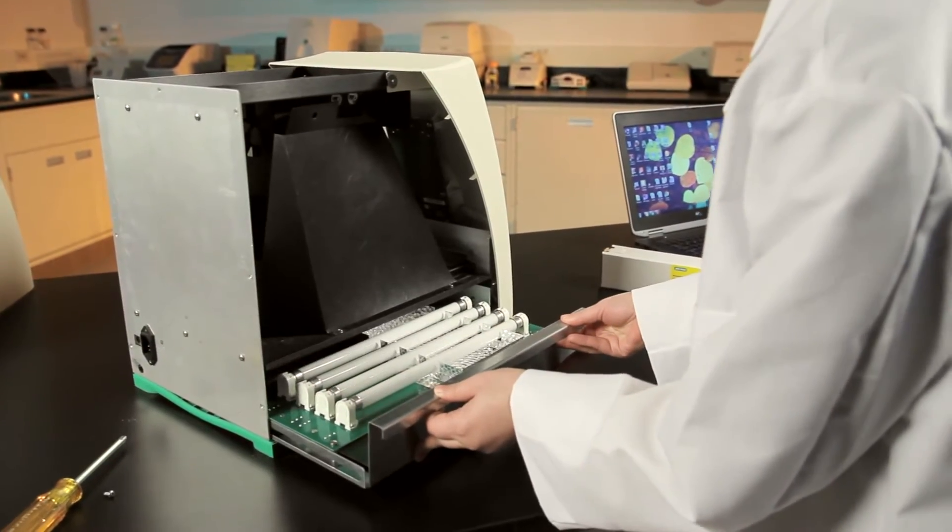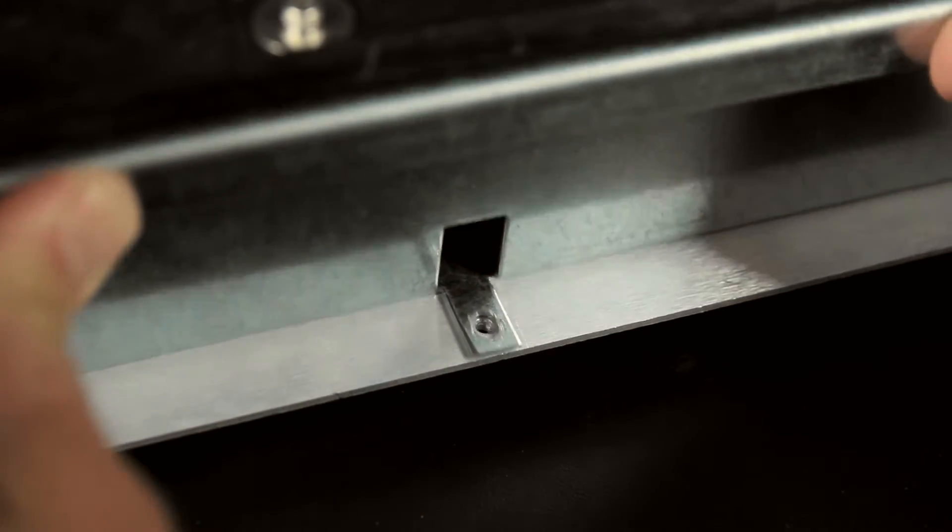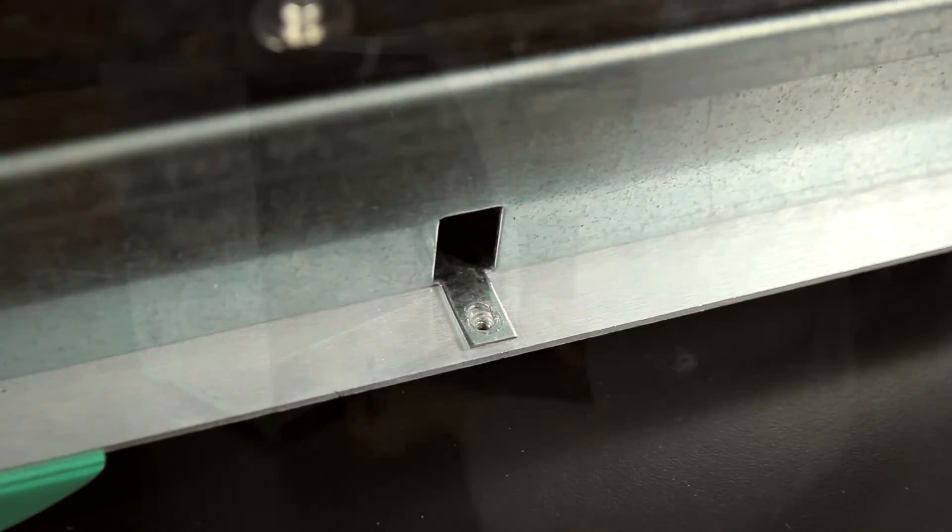Once you've replaced all four bulbs, slide the lamp drawer back in and replace the securing screw. You may need to push the side of the drawer down next to the screw tab so that the holes align.